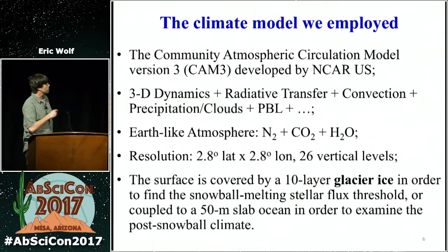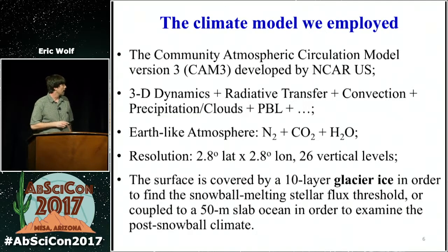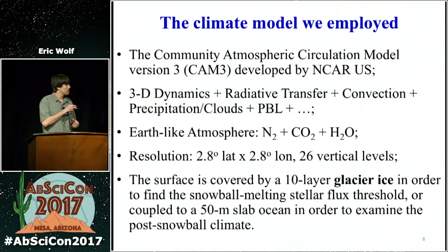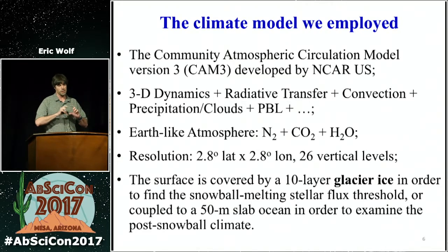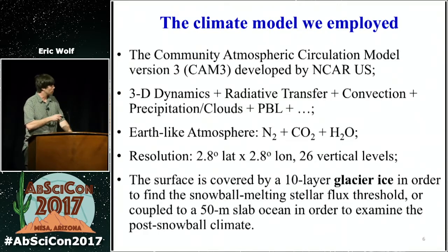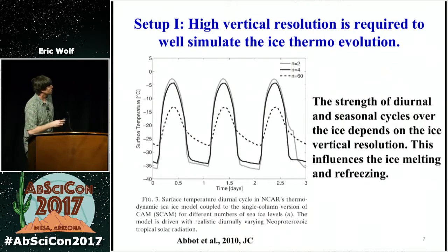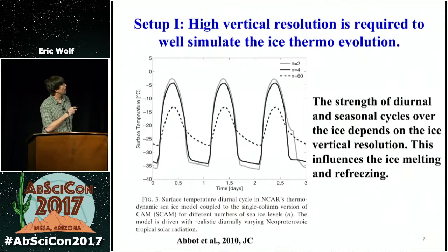The resolution is 2.8 by 2.8 degrees with 26 vertical levels. The big improvement they've made upon previous studies is they've improved the ice model. They use a 10-layer glacial ice model in order to determine when the snowball melting stellar flux threshold will occur. This ice model is laid on top of a 50-meter slab ocean model, assuming zero heat transport for simplification purposes. The first key improvement is they use higher vertical resolution to simulate the ice.